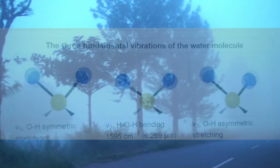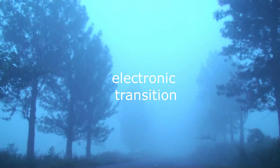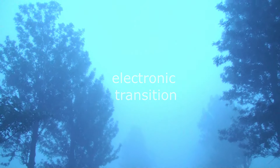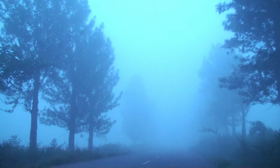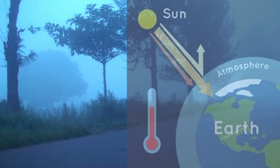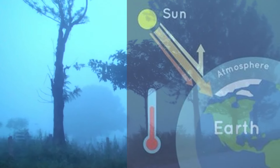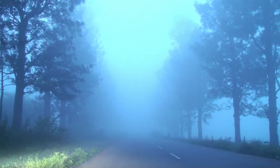The third is electronic transitions — these occur in the ultraviolet region and involve the promotion of electrons to higher energy levels. The absorption of infrared light by water vapor is significant because it contributes to the greenhouse effect, trapping heat in the Earth's atmosphere. Understanding water vapor absorption is crucial for climate models and predicting weather patterns. Satellites use this knowledge to measure humidity and other atmospheric properties.